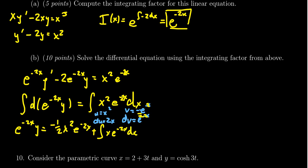For the second integration by parts, same basic strategy: u equals x, so du equals dx. Then dv equals e to the negative 2x dx — doing it correctly this time — so v equals negative one-half e to the negative 2x.